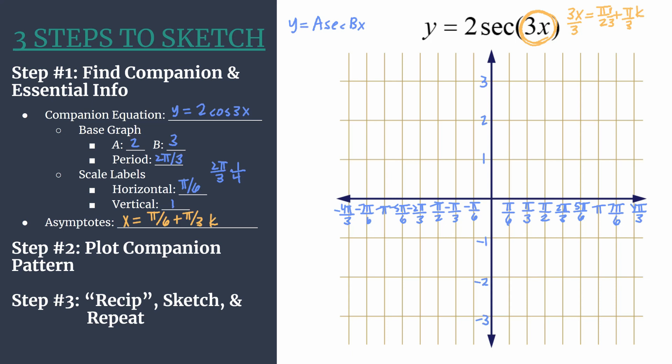If you're not familiar with this k, it's an integer. It can be any integer, and depending on what integer you substitute in and simplify, it'll generate a different asymptote for your graph. Say you let k equal 0: our final graph should have an asymptote at π over 6. Let k equal 1, and you'll see you should have another asymptote at π over 2.